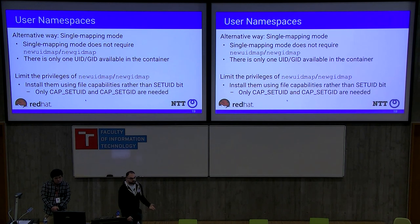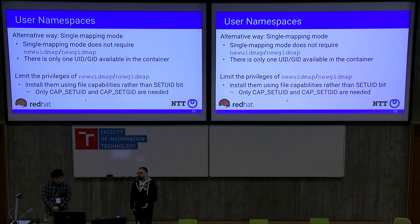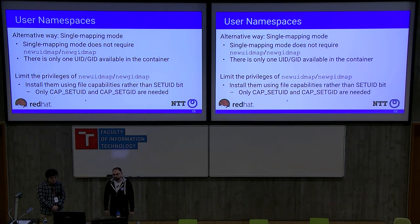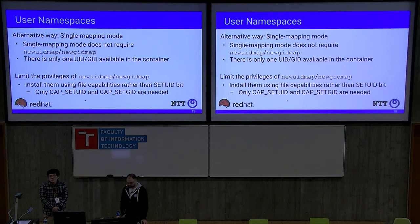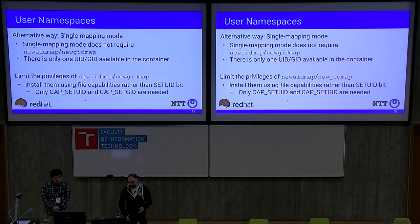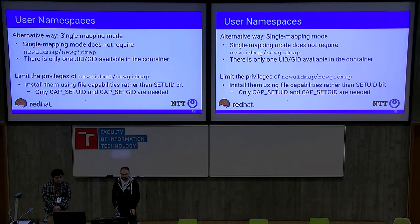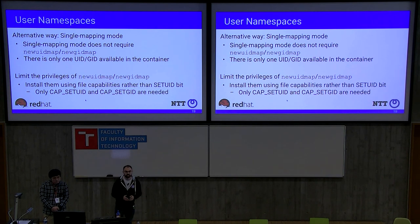The simple alternative is to use a single ID mapping, but that will break many images — it only works for applications run as a single user. The other approach we followed is to limit the privileges of these setuid applications. New versions are installed not as setuid programs but using file capabilities, because all they need are just two capabilities out of the full root set. So even if the application is exploited, only two capabilities are available, limiting the damage.